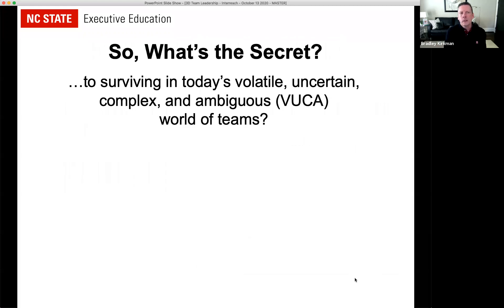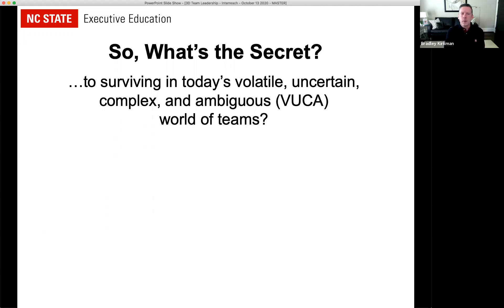Given all that complexity, I typically use the acronym VUCA, which came from the Army War College. It stands for volatile, uncertain, complex, and ambiguous. That's pretty much the business world we live in, and it's gotten much more complex with COVID. So I'd ask you in the chat: if today's world is a VUCA world of teams, what's the one thing a leader needs to be able to do to survive and thrive?